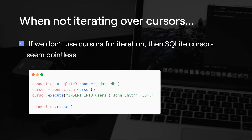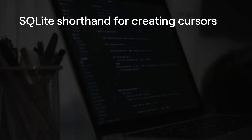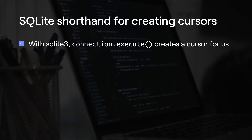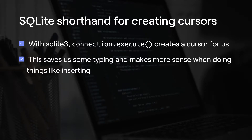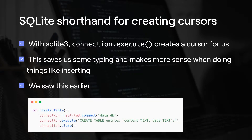You may have noticed earlier on in a previous presentation that we didn't use a cursor. That's because when we do connection.execute, that creates a cursor for us, which saves us some typing and makes a bit more sense when doing things like inserting. Here, for example, we're not creating a cursor with connection.cursor — we're just doing connection.execute. SQLite behind the scenes automatically creates a cursor and executes the query using that cursor, but we don't have to do that ourselves. I would normally recommend creating the cursor yourself when you want to use it, and using connection.execute when you don't, so it's clearer that you're not getting a cursor that won't be used.